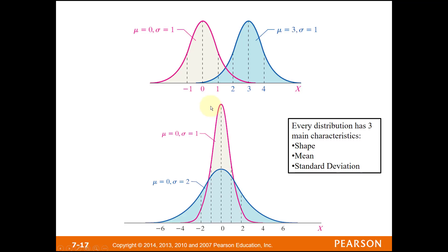Every distribution has three main characteristics: shape, center, and spread. Looking at different versions of a normal distribution, the shape is the same for all of them. Center is measured by the mean, and spread is measured by standard deviation. The top two graphs have the same standard deviation (σ = 1) but different means — one centered at 0, the other at 3. The bottom two are both centered at zero (same mean), but the blue graph is more spread out because its standard deviation is double that of the red.